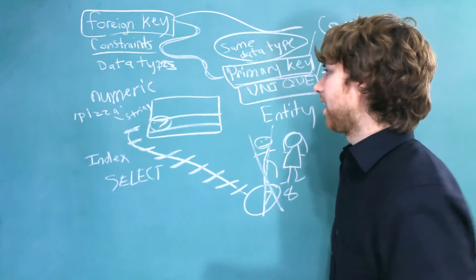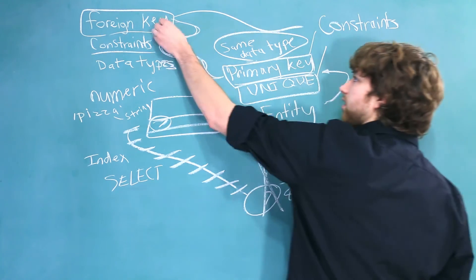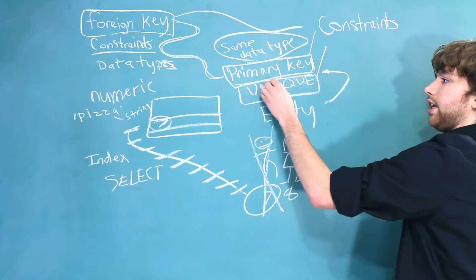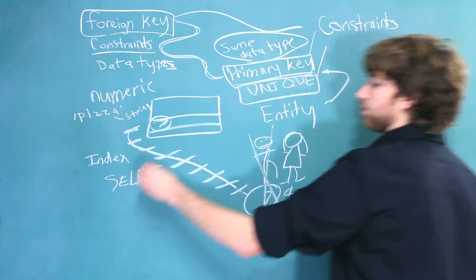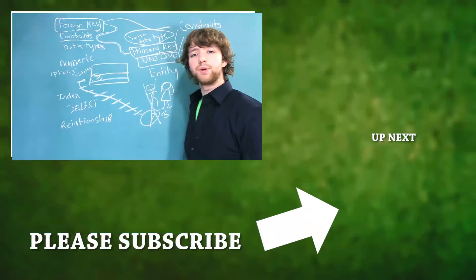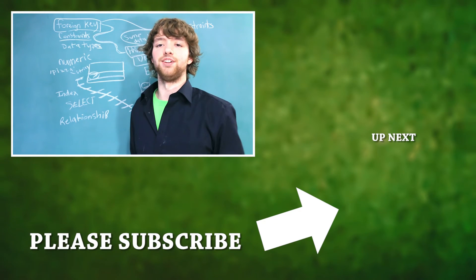Now, the last thing I got for you guys is that when you have a foreign key referencing a primary key or a unique column, this is known as a relationship. And that is what we will be discussing in the next video.